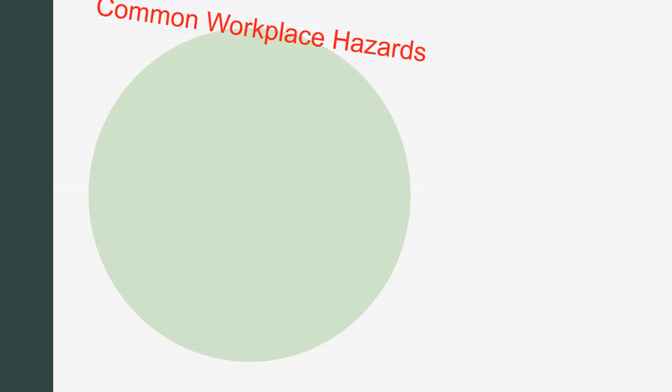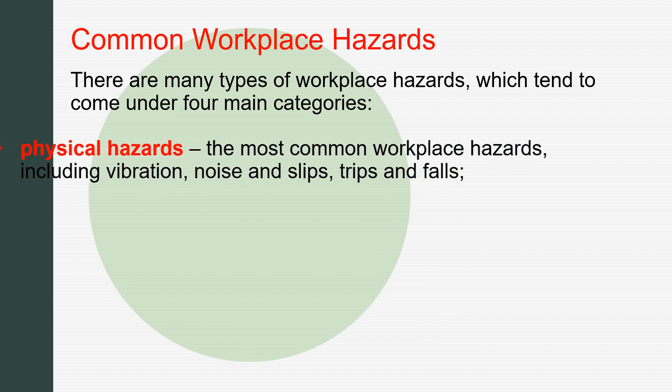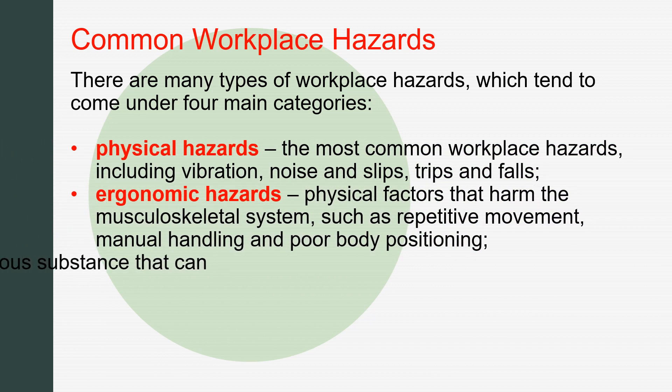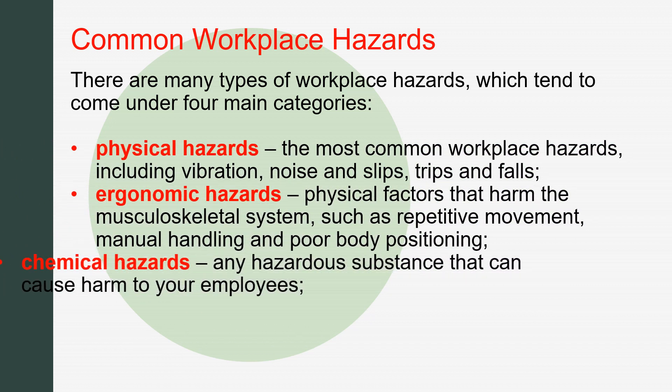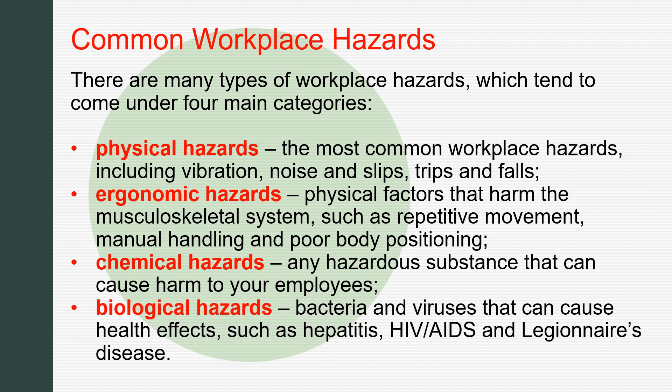Common Workplace Hazards. There are many types of workplace hazards which tend to come under four main categories. Physical hazards, the most common workplace hazards, including vibration, noise, slips, trips, and falls. Ergonomic hazards — physical factors that harm the musculoskeletal system — such as repetitive motion, manual handling, and poor body positioning.